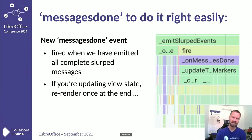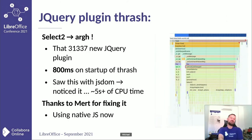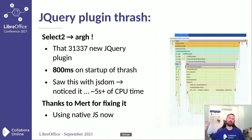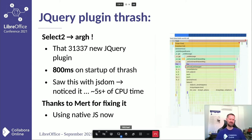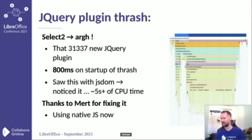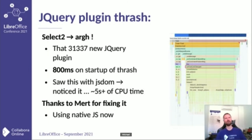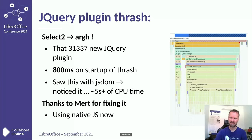We now have a messages-done event that does all of this processing at the end when everything is slurped in. We also discovered from writing profiling tools — running five or six random typers in parallel through the JavaScript code — that there was cargo-culted jQuery plugin code doing something unimportant that was taking 800 milliseconds, five seconds on startup with the full JS DOM. Mert fixed that, making our traditional menu-and-toolbar user experience massively faster to start.